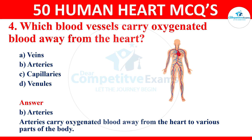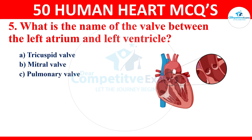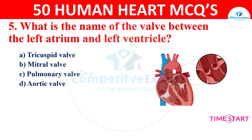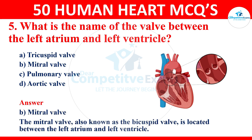Question 5: what is the name of the wall between the left atrium and the left ventricle? Your options are tricuspid wall, mitral wall, pulmonary wall, or aortic wall. The correct answer is mitral wall, also known as the bicuspid wall, located between the left atrium and the left ventricle.